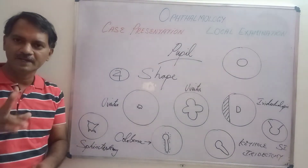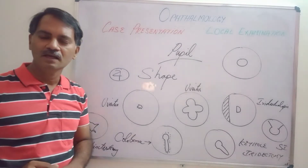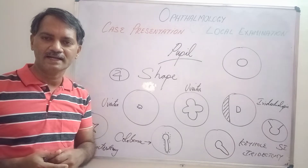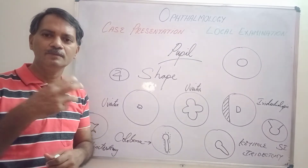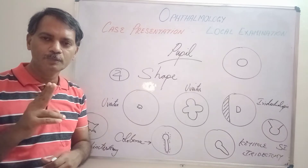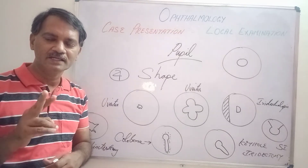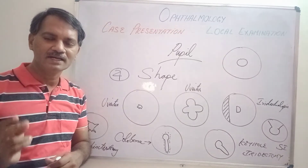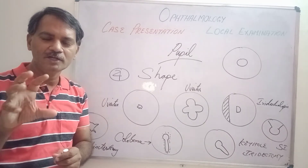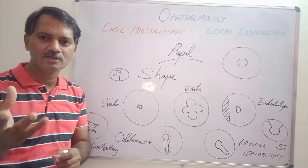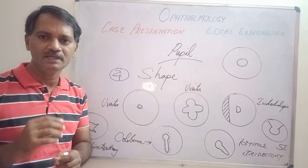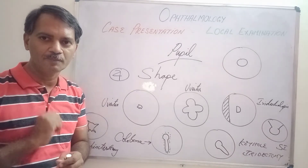Another important cause for irregular shaped pupil is sphincterotomy — cutting the sphincter during cataract surgery. Whenever there is difficulty delivering the cataractous lens through the pupil due to its small size, the sphincter pupillae is cut at several points, causing some dilatation so the nucleus can be delivered easily and the surgery can be completed without much complication.